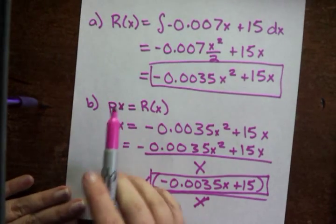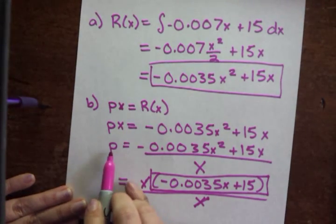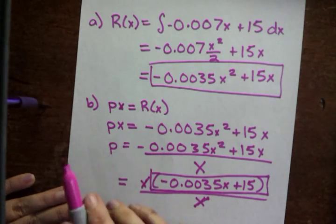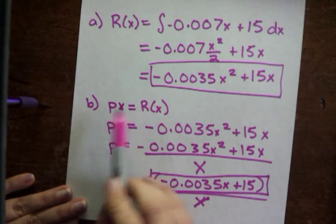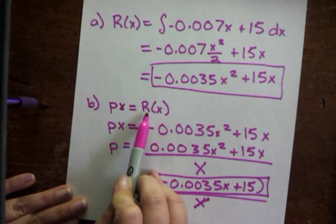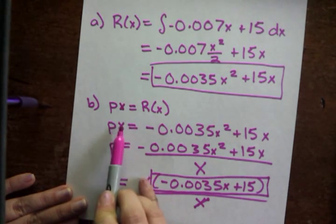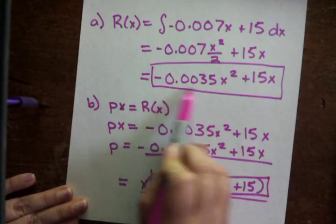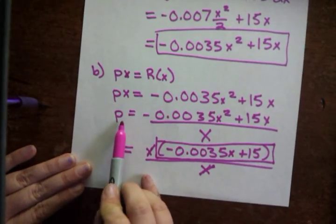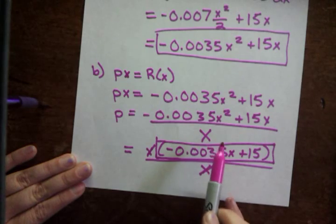For part b, they want p, they want the demand equation. We know from past lessons that p times x is the revenue function. So p times x is exactly what we found for the revenue function up here. So if we just want p, we need to divide the revenue function by x.